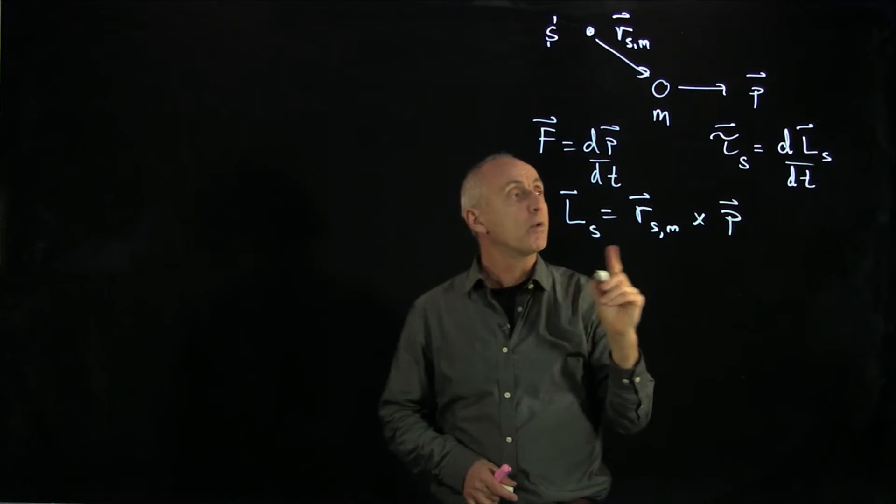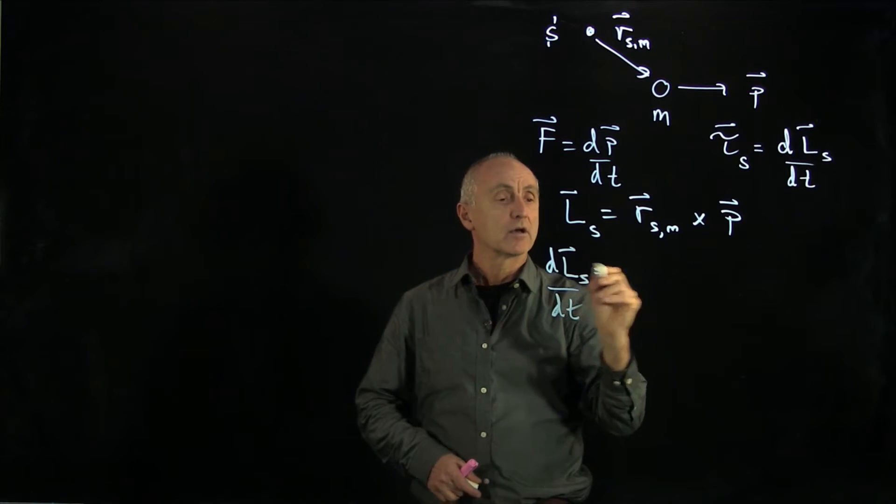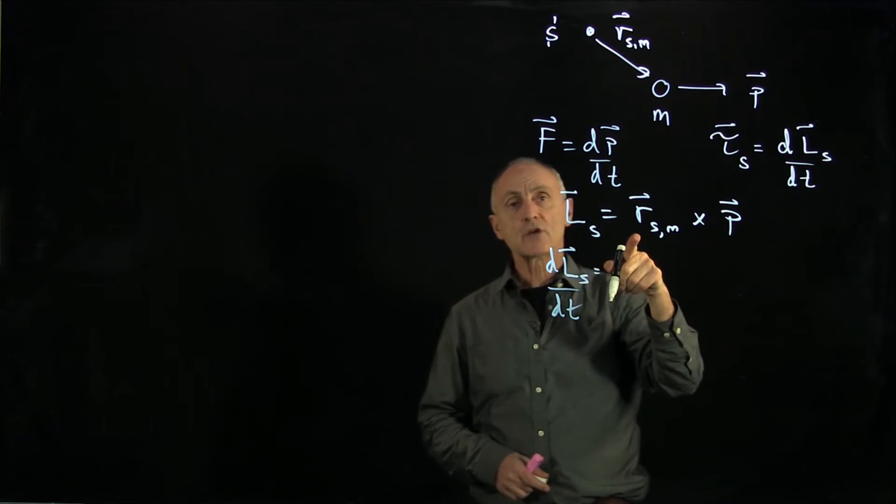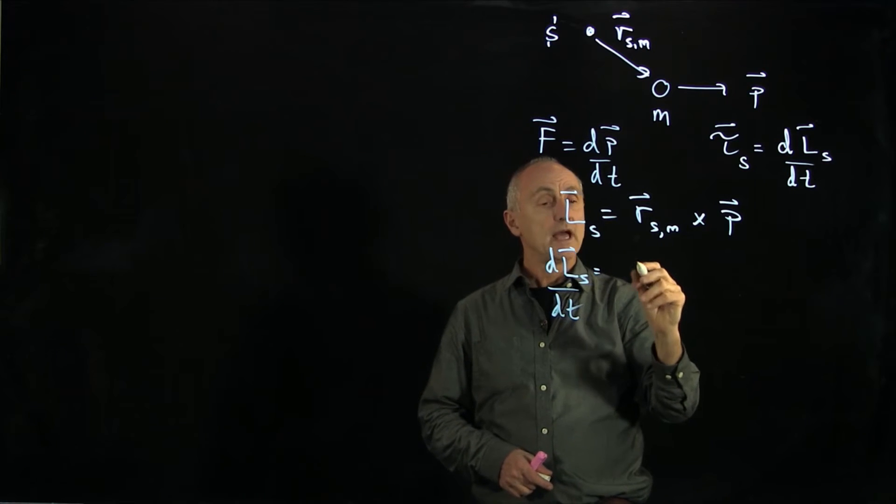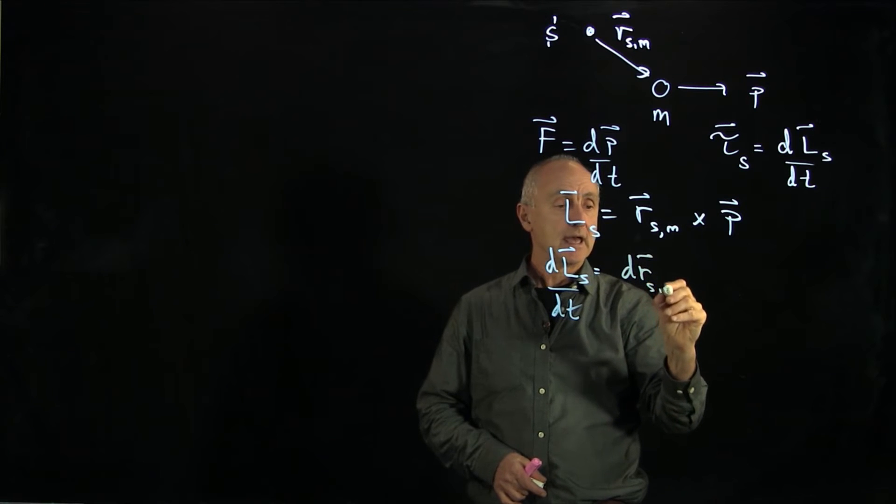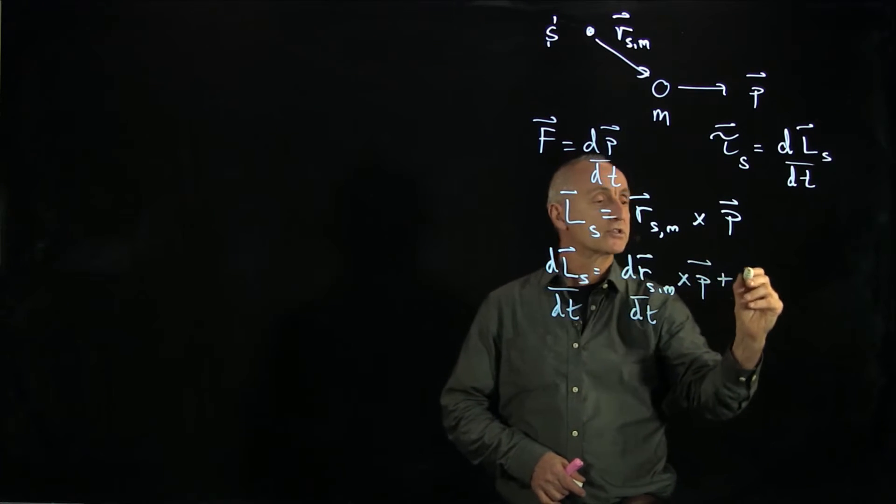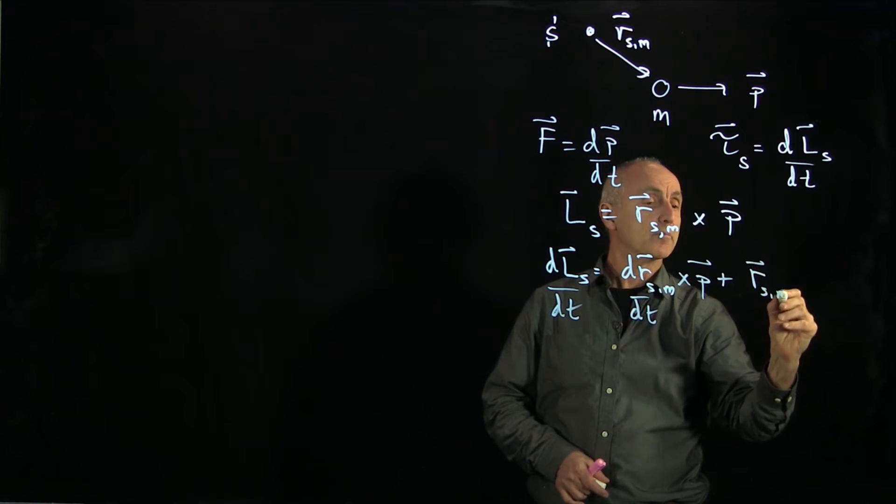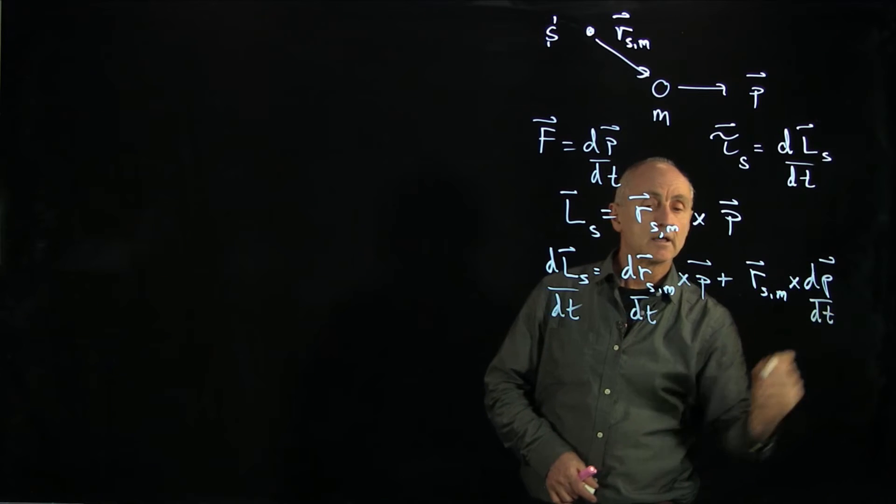And what we want to now calculate is the time derivative of that quantity. When you take the time derivative of a vector product, it's the product rule. And so there's two terms here. It's drs m dt cross p plus rsm cross dp dt.